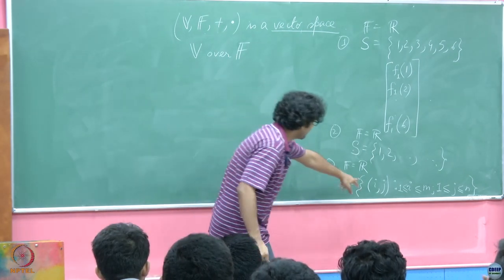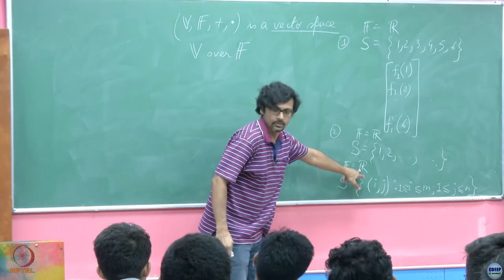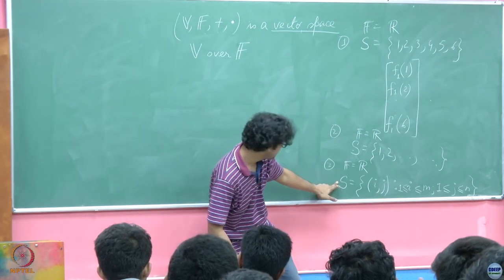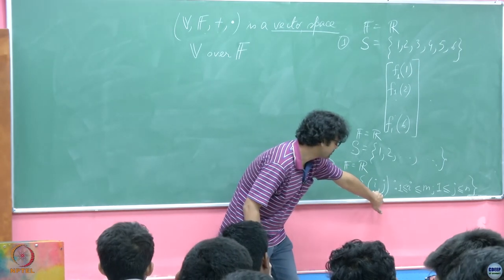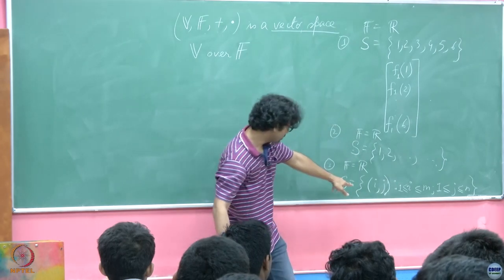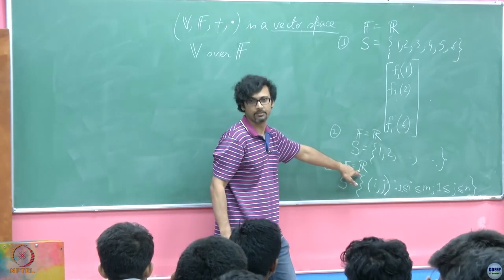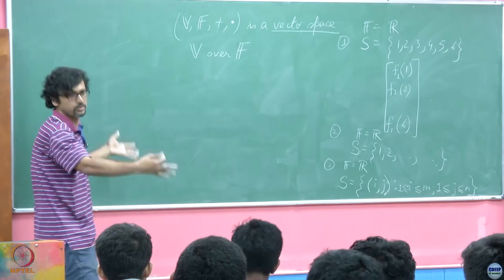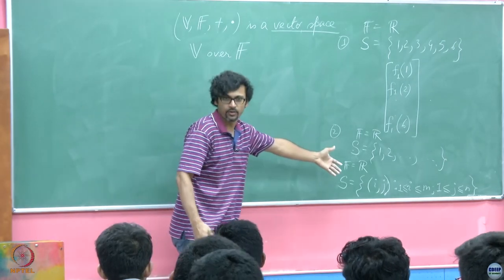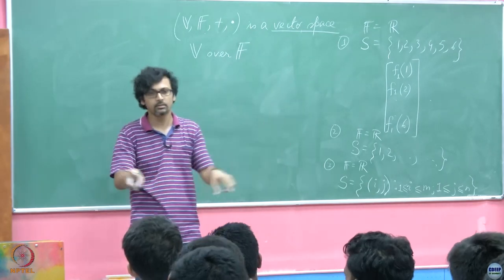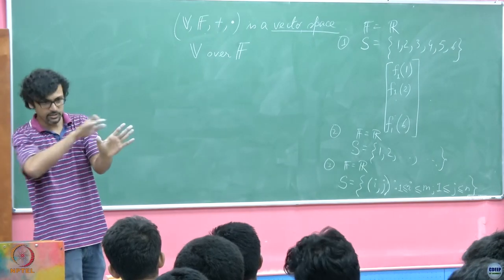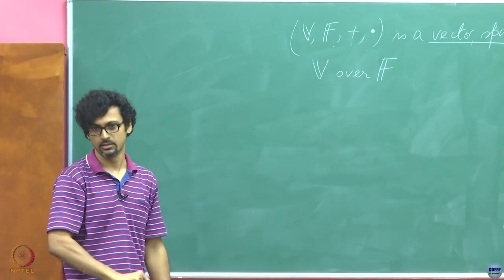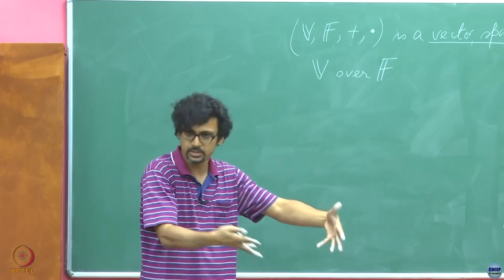You can think of the matrix example as mapping every (i, j) to a real number — this is its domain. We are interested in functions that take elements from the domain S and map them to the field. So corresponding to every (i, j) pair, I am going to tell you a real number. Essentially they form a collection of doublets, but we may as well write them as a matrix. For every (i, j) with i from 1 to m and j from 1 to n, at every grid junction you have some real number sitting — and the best way to represent that array is through matrices.